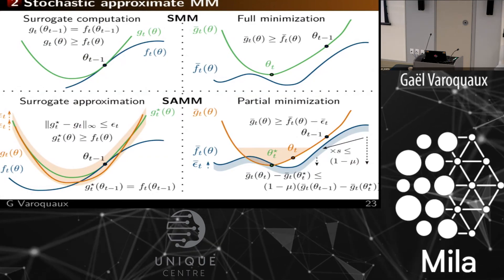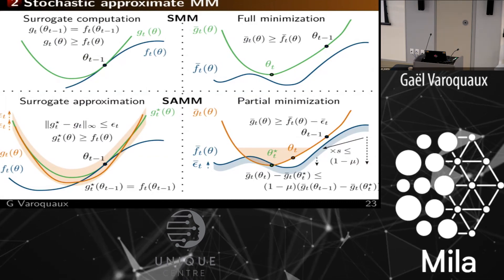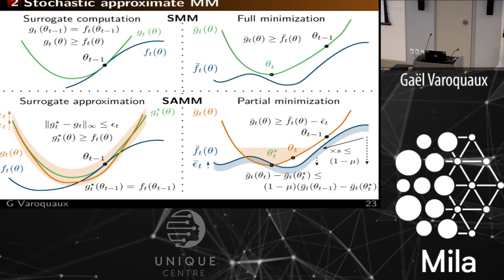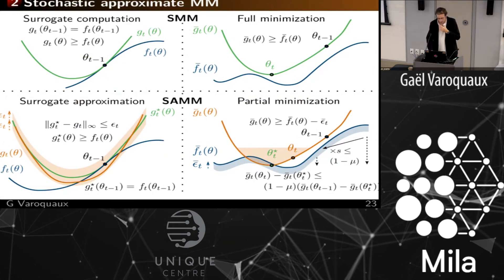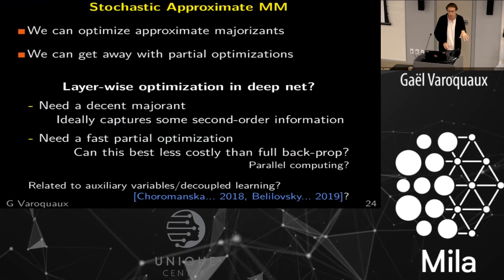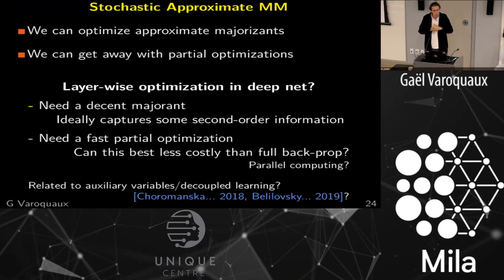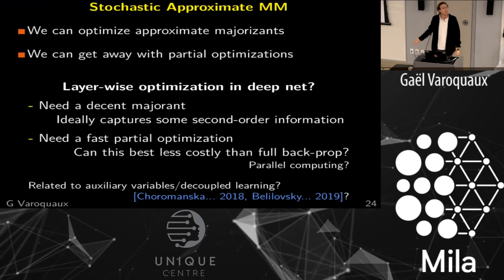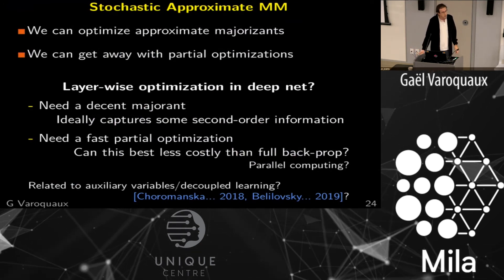To summarize: we have stochastic MM — grab data point, compute surrogate cost, optimize the surrogate. And stochastic approximate MM — the surrogate cost is approximate but gets closer and closer to the actual one; the minimization is partial but the error decreases. If we have this, we converge. The results: you can optimize an approximate majorization and it will still work; you can get away with partial optimizations and it will still work. Technical details: the approximate majorization needs to converge in expectation to the actual one, and partial optimization needs to get better with time.